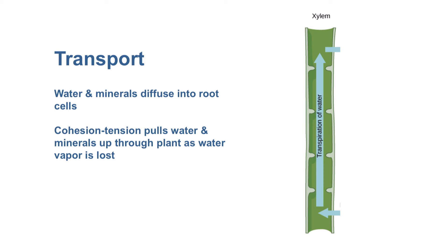So basically, the way water moves up in a plant, even one as high as a hundred foot tall redwood, is that the cohesion and the tension are pulling the water molecules up through the plant as water vapor is lost out the top.